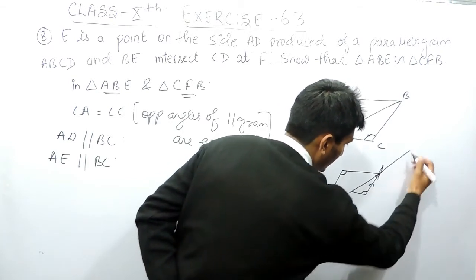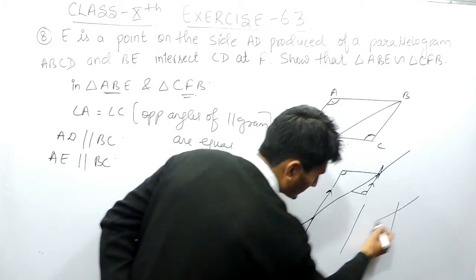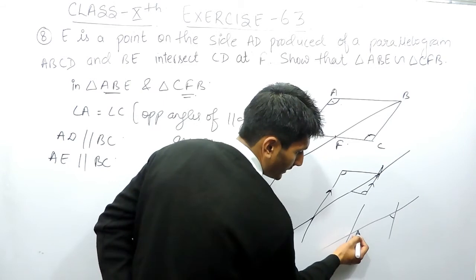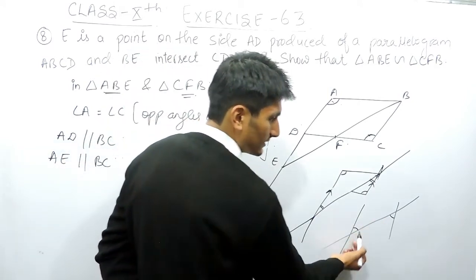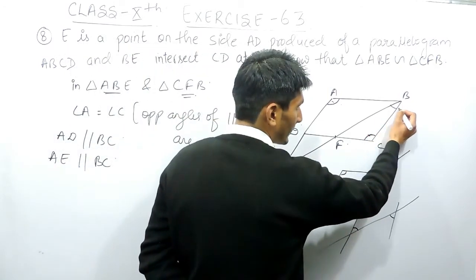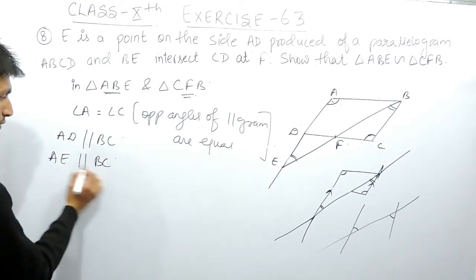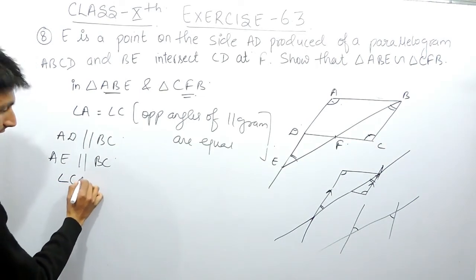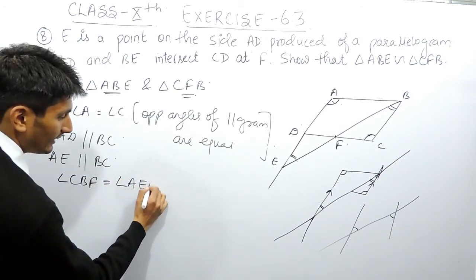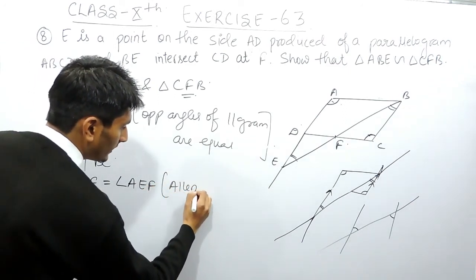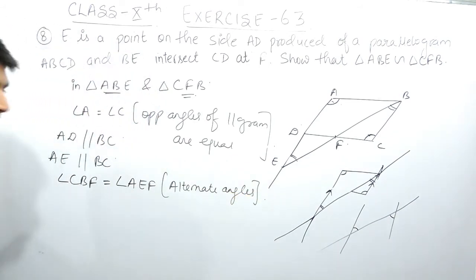Since AE is parallel to BC and BE is a transversal, if these two lines are parallel and this is a transversal, then angle CBF must be equal to angle AEF because these are alternate angles. We know that alternate angles on parallel lines are equal.